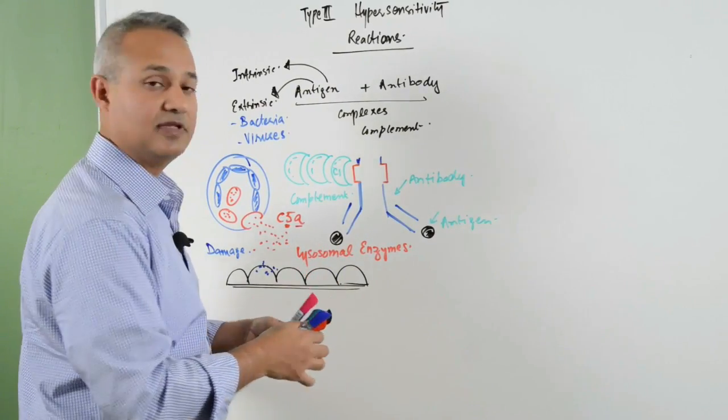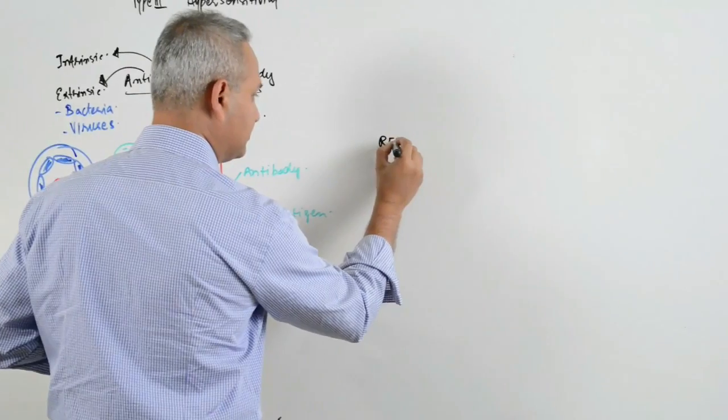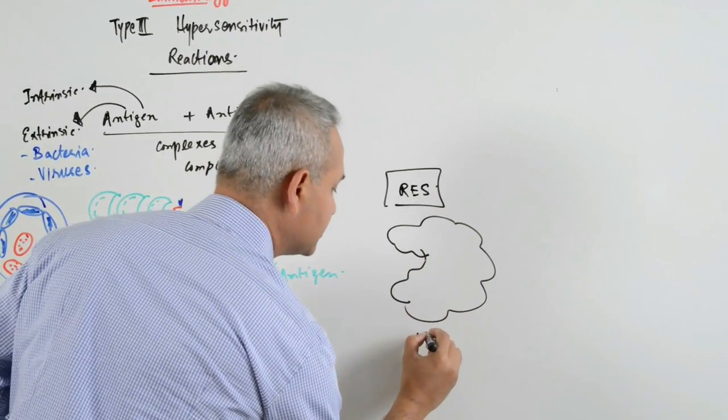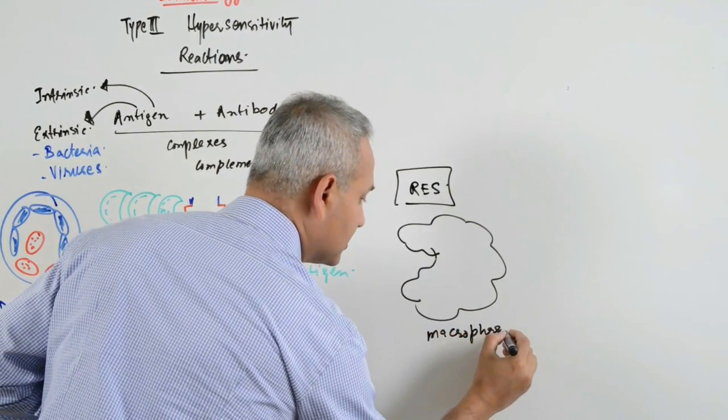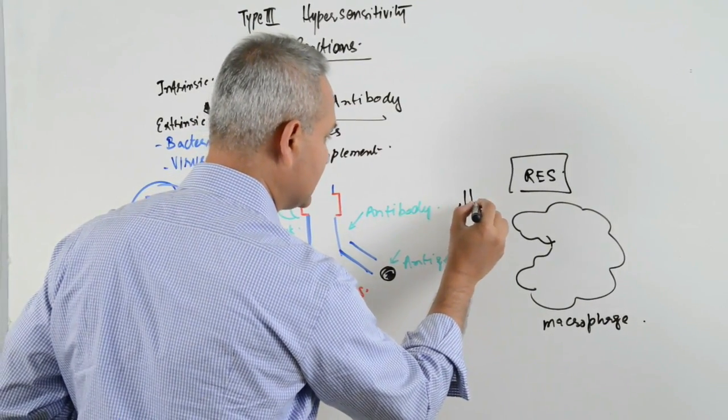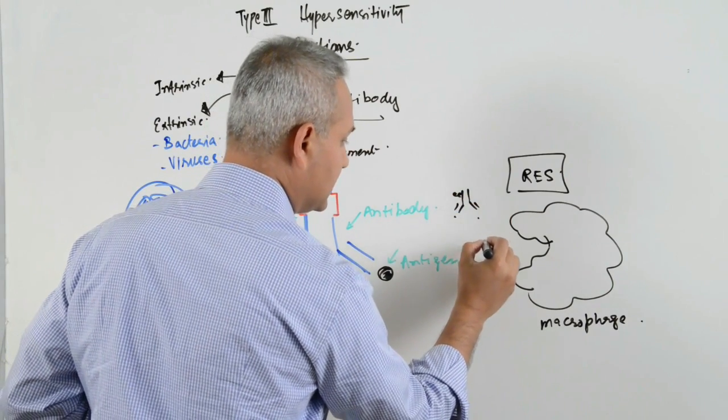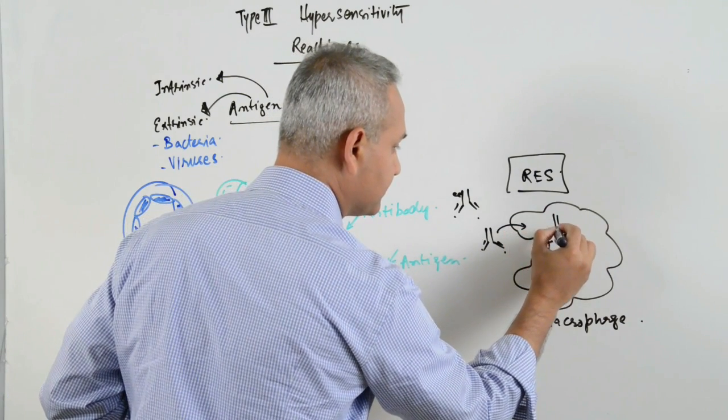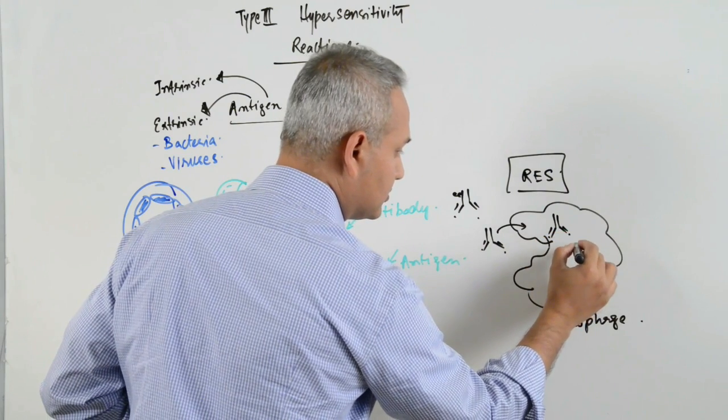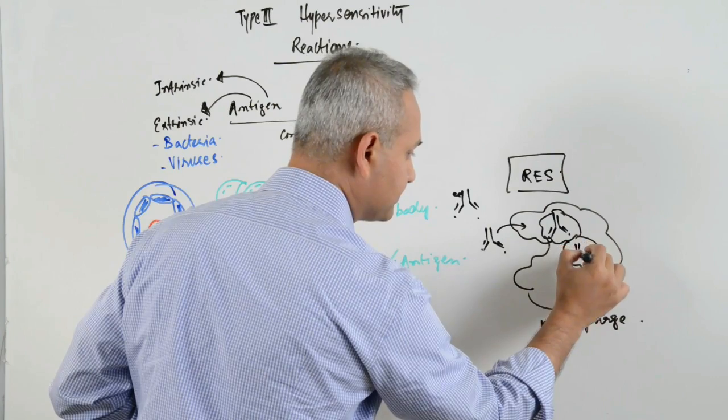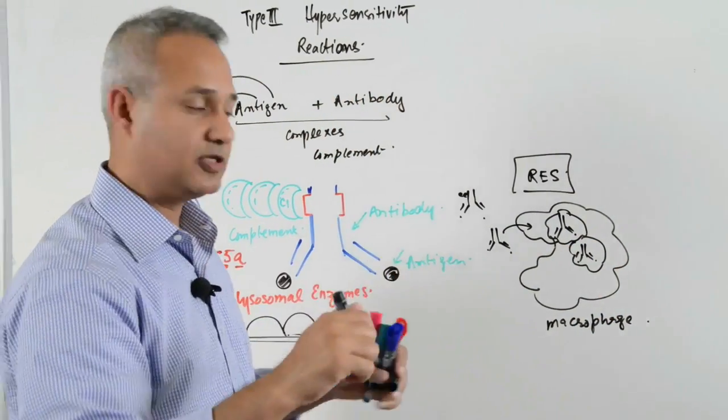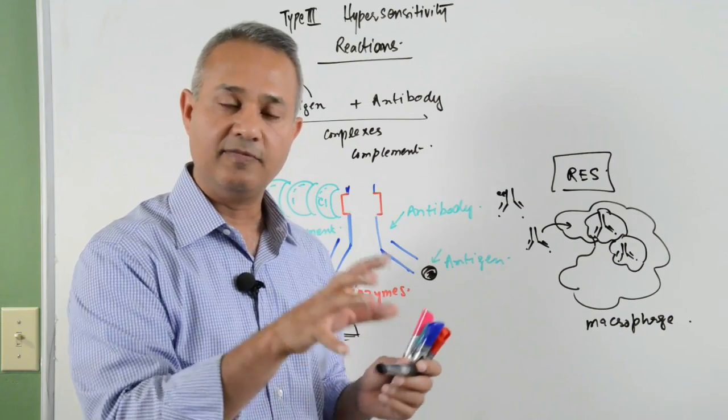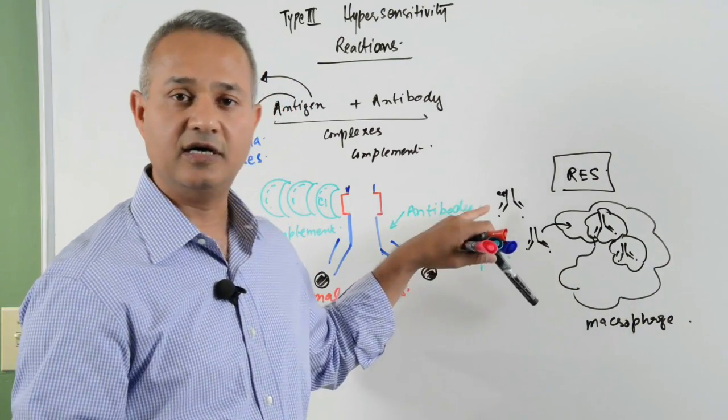Because the reticuloendothelial system - that means macrophages and such other cells. Let's say this is a macrophage - these cells pick up these complexes. If I make the complexes here now smaller with the complements, these cells will pick up these complexes and phagocytose them inside a vacuole and clear them away. These reticuloendothelial system cells - cells present in the liver, cells present in the spleen, macrophages - would eat up these complexes and clear them out.